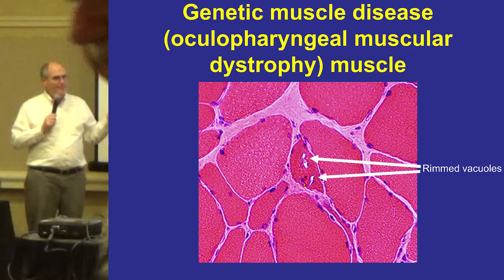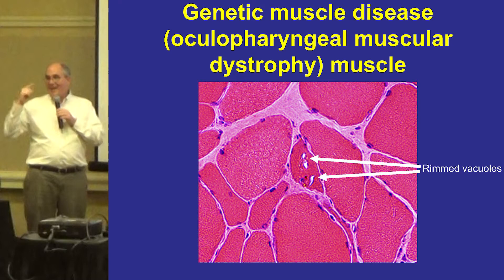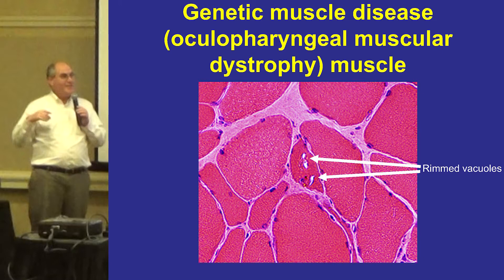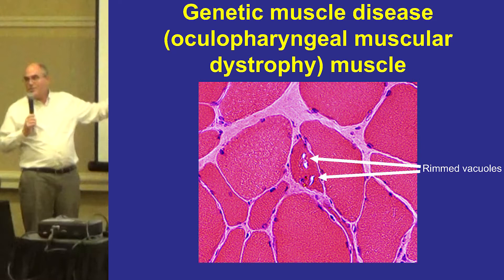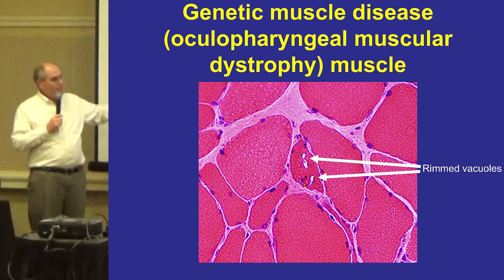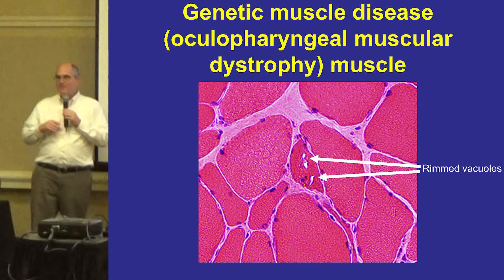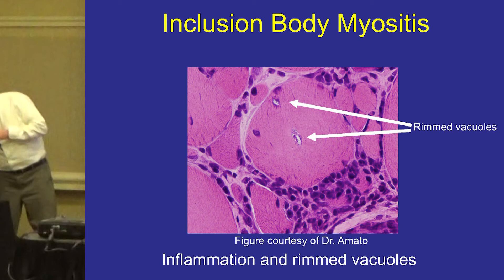A couple years ago at TMA, someone came up and said they had swallowing problems and a muscle biopsy consistent with inclusion body myositis. But on examination, they had proximal muscle weakness, no distal weakness, a little bit of facial weakness, and a father with similar facial weakness. What they actually had was oculopharyngeal muscular dystrophy, because when I examined their hands, there was no finger flexor weakness at all. This is also from Canada, where a lot of this disease occurs. In OPMD you have rimmed vacuoles and abnormal protein accumulation, but this is not an autoimmune process at all.